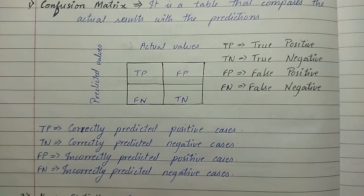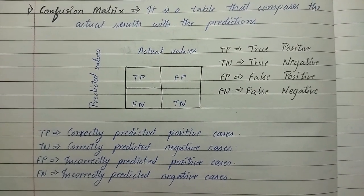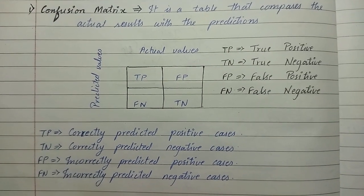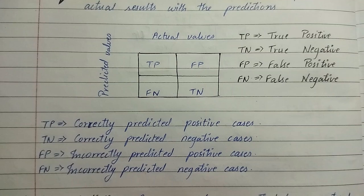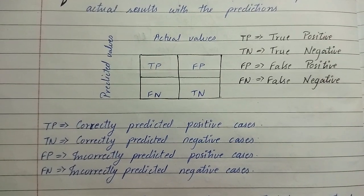True positive is correctly predicted positive cases, and true negative is correctly predicted negative cases. False positive is incorrectly predicted positive cases, and FN stands for incorrectly predicted negative cases.